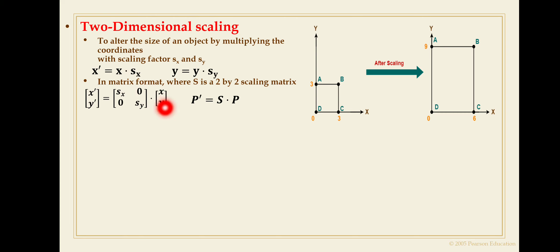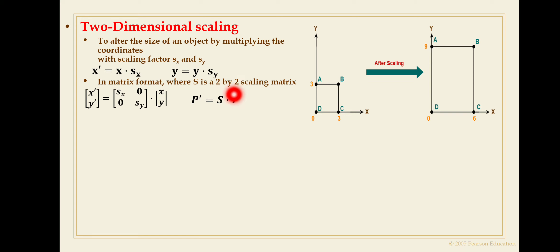The general formula for scaling is: P' = S · P, where P' is the new position of point P, S is the scaling matrix, and P is the original position. If the scaling factors sx and sy are less than one, the size of the object is reduced and it moves closer to the origin. On the other hand, if sx and sy are greater than one, the size of the object is enlarged and it moves away from the origin.